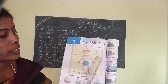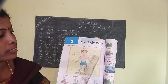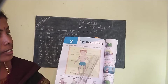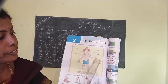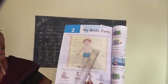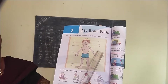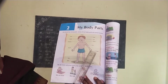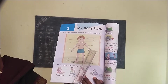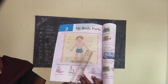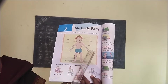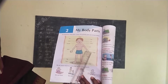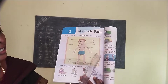Which part is this? Neck. N-E-C-K. Neck. Next, which part is this? Arm. A-R-M. Arm. Here, fingers are there — five fingers. F-I-N-G-E-R-S. Fingers.